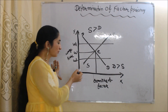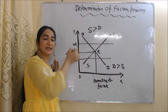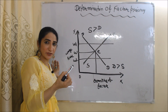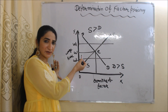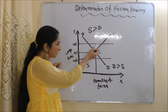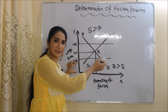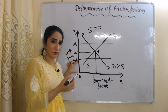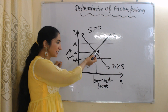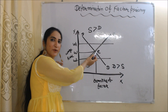Suppose the wage rate increases from OW to OW1. As wage rate increases, industry supply exceeds industry demand, because at a higher wage rate more people want to work but fewer companies want to give jobs. As a result, the wage rate will reduce from OW1 back to OW, and we reach equilibrium again. Now suppose the wage rate falls from OW to OW2. At a lower wage rate, labor demand exceeds labor supply, because people want to do fewer jobs but companies want to hire more people. As a result, wage rate will increase and we again reach the equilibrium point where demand equals supply. So E is our equilibrium point where wage rate is determined.